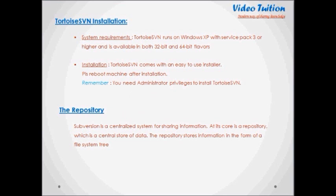Let's start with installation information of TortoiseSVN. First, system requirements: TortoiseSVN runs on Windows XP with Service Pack 3 or higher and is available in both 32-bit and 64-bit flavors. The installer for 64-bit Windows also includes the 32-bit extension parts, which means you don't need to install the 32-bit version separately to get the TortoiseSVN context menu and overlays in 32-bit applications. If you are using XP, you must have at least Service Pack 3 installed — it won't work without it.